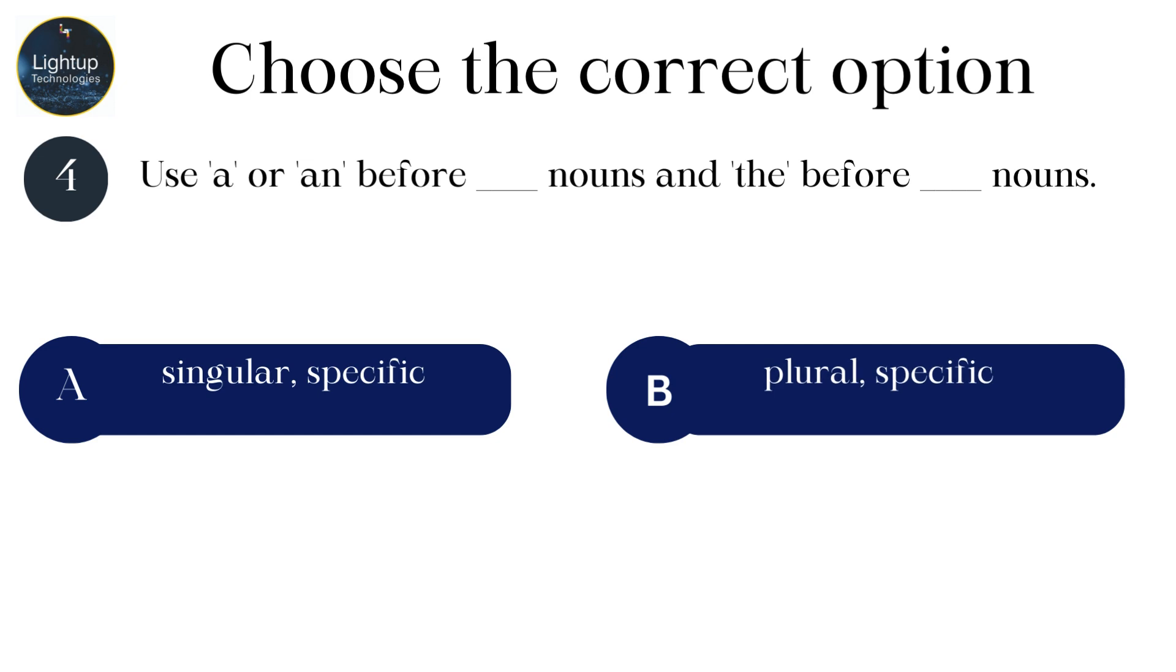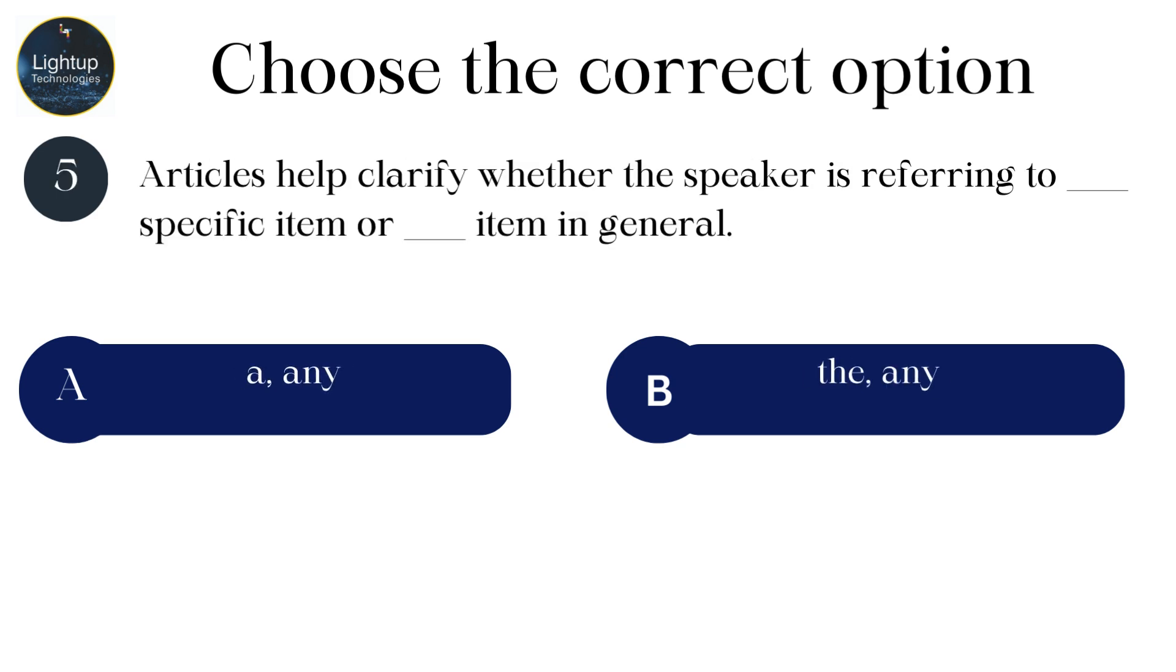Use a or an before blank nouns and the before blank nouns. Articles help clarify whether the speaker is referring to blank specific item or blank item in general.